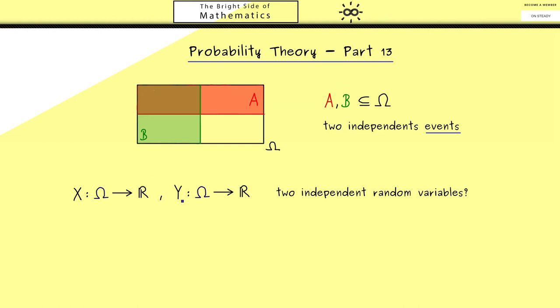Now the question is for two random variables X and Y, how do we define independence? Or to say it differently, how do we get back to the independence of events?